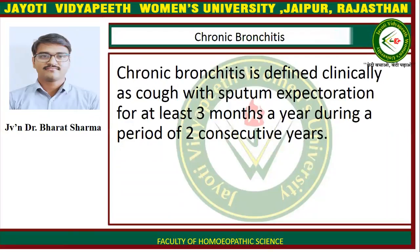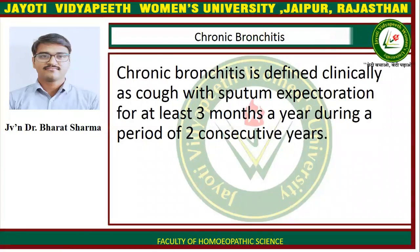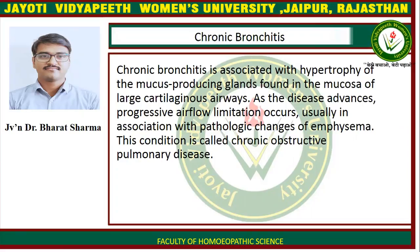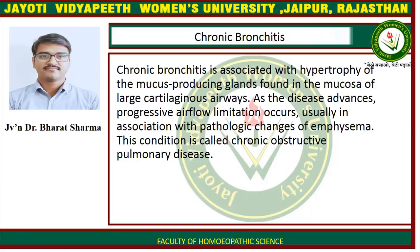Chronic bronchitis is defined clinically as cough with sputum expectoration for at least 3 months a year during a period of 2 consecutive years. Chronic bronchitis is associated with hypertrophy of the mucus-producing glands found in the mucosa of large cartilaginous airways. As the disease advances, progressive airflow limitation occurs, usually in association with pathologic changes of emphysema.